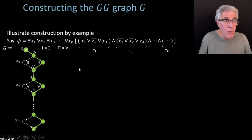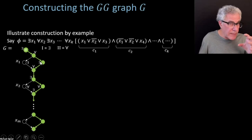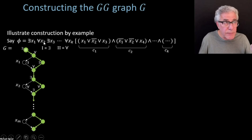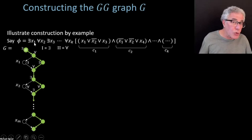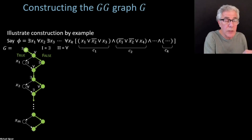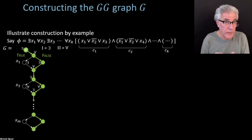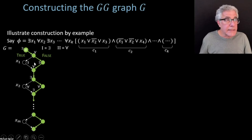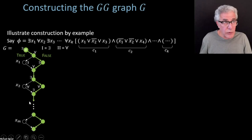When Exist has a choice over here — going left or right — that corresponds to Exist in the formula picking the variable either true or false. Left corresponds to true and right corresponds to false. So in the path I traced, Exist picked the first variable false, ForAll picked the second variable false, and the mth variable also got set false. The left/right choices encode the truth assignment cooperatively built by the two players.